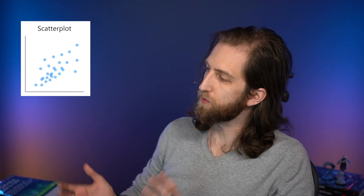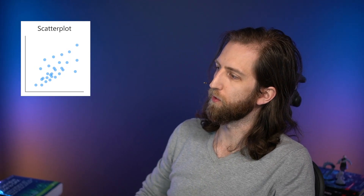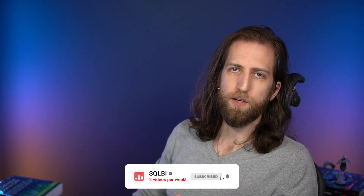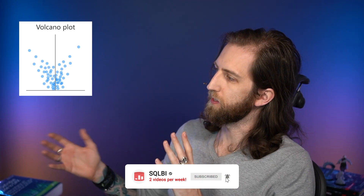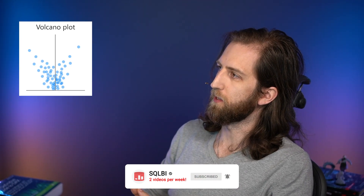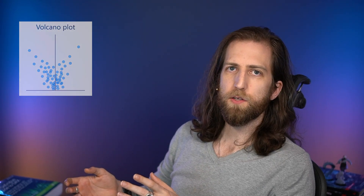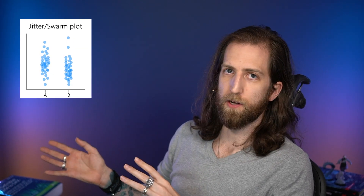Ciao friends, welcome to another video from SQLBI. In a previous video, we talked about the scatter plot, which can be a really useful chart type for looking at the distribution of your data, like identifying outliers. We talked about all the different types of scatter plots, including the volcano plot, but we also mentioned the swarm or jitter plot.